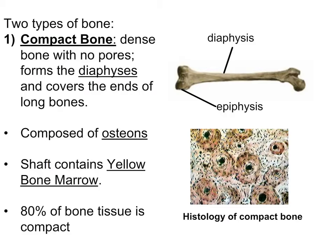Since I mentioned spongy bone, let's review the two different types of bone tissue. The first is called compact bone. Compact bone is a very dense bone that really doesn't have any visible pores — at least none visible macroscopically. It tends to cover the entire outside of the bone, but it also makes up the majority of the diaphysis, which was the shaft of a long bone. The functional unit of compact bone is called an osteon — these are circular structures that look kind of like the sectioned trunk of a tree. The diaphysis principally contains yellow bone marrow, which is primarily fat, and about 80% of a bone tends to be made up of compact bone.